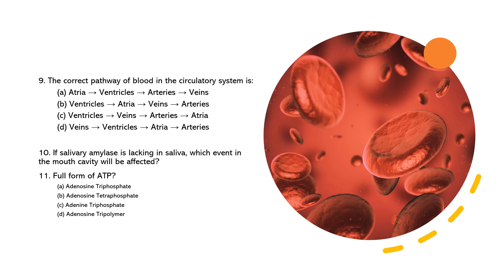Shifting to the circulatory system, can you recall the path of blood circulation in the human body? Consider the flow from the atria to the ventricles through the arteries and veins. The sequence is found in which option of question number nine? Yes, the correct answer for question number nine is option A.